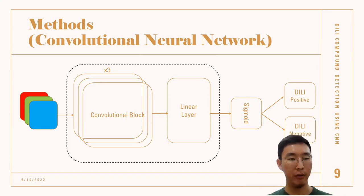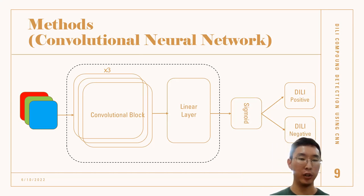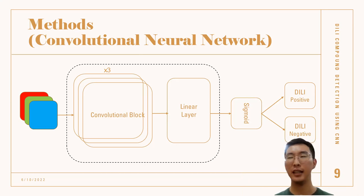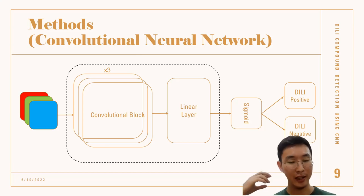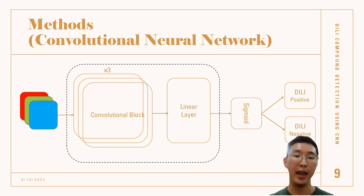For the method, I used a convolutional neural network. Specifically, I used a convolutional block, which is a series of convolutional layers stacked on top of each other — three stacked convolutional layers and a linear layer, basically a simplified version of a feedforward neural network. I used sigmoid to determine whether the result was DILI positive or DILI negative. So the picture with three channels would go into this model and be classified as positive or negative.